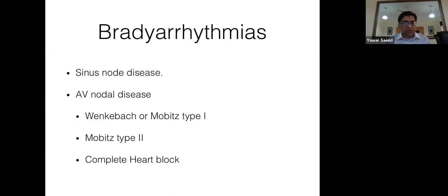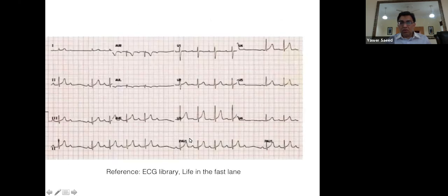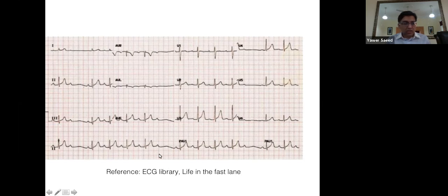Bradyarrhythmias include sinus node disease and AV nodal disease: Wenckebach (Mobitz type 1), Mobitz type 2, and complete heart block. This ECG shows a narrow complex bradycardia typical of Mobitz type 1 or Wenckebach — note the progressive prolongation of the PR interval, crowding of QRS complexes, then a dropped beat. Narrow complex bradycardia gives you time to act.